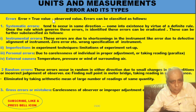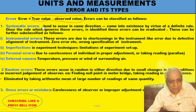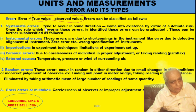Error means true value minus observed value — keep this in mind, it is true minus observed, otherwise the sign would change. Errors are of various types; the main two types are systematic error and random error. Systematic errors occur always in the same direction, because certain rules are not being followed or there is some problem with the instrument. For example, if the instrument has a zero error, that zero error will appear in all readings — all readings will be affected in the same direction. Positive zero error has one effect; negative zero error has the opposite effect.